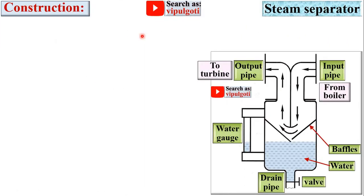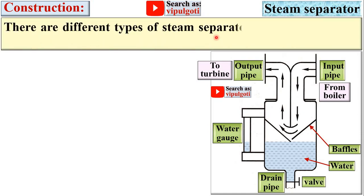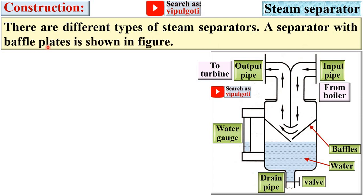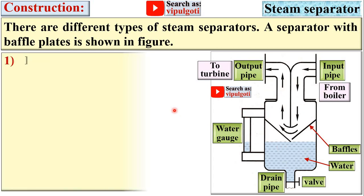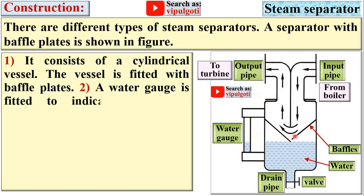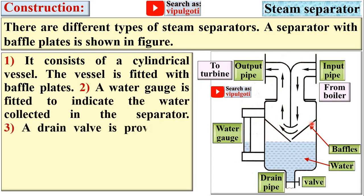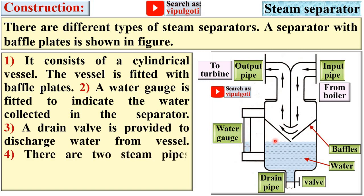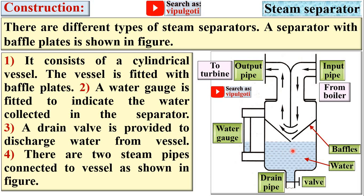Now the construction of the steam separator. There are different types of steam separators. A separator with baffle plates is shown in this figure — this is called the baffle type steam separator. It consists of a cylindrical vessel fitted with baffle plates. A water gauge is fitted to indicate the water collected in the separator. A drain valve is provided to discharge water from the vessel. There are two steam pipes, both connected to the vessel as shown in the figure.